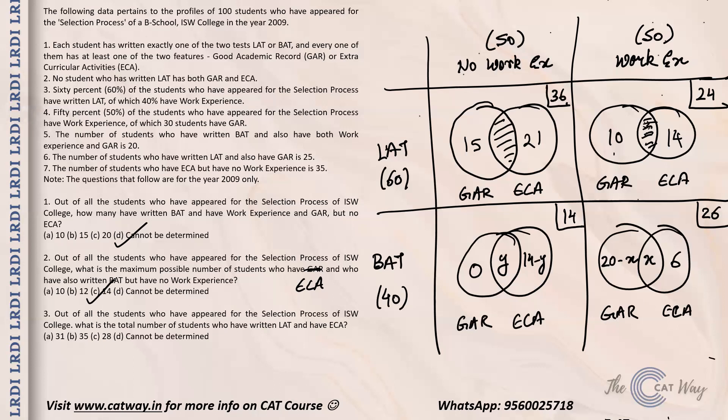The next question asks: what is the total number of students who have written LAT and have ECA? LAT with ECA consists of 21 (no work experience) plus 14 (work experience), giving a total of 35. So the correct answer is option B, 35.